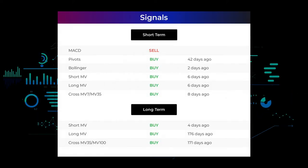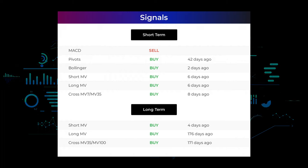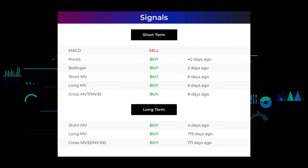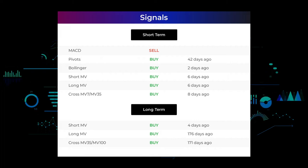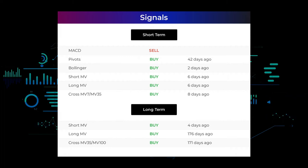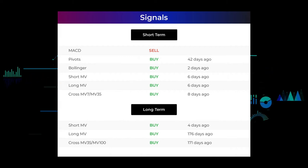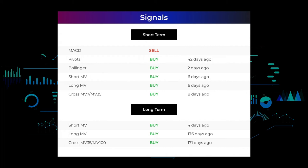Here are some other signals you might find interesting. The moving average convergence divergence (MACD) holds a sell signal. The short-term moving average gave a buy signal 4 days ago. The long-term moving average gave a buy signal 176 days ago. The relation between the short and the long moving averages gave a buy signal 171 days ago. Remember to go to our page at stockinvest.us if you want to find more signals.